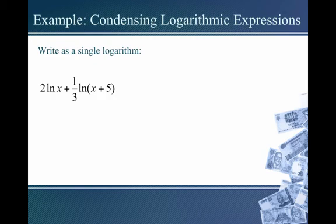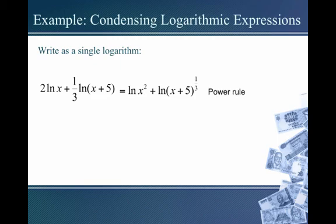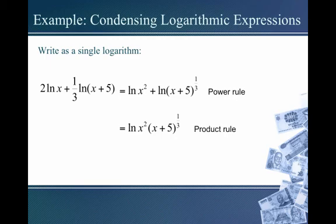Last example: 2 ln of x plus one-third ln of x plus 5. Start with the power rule — rewrite the coefficients as powers inside the natural log. The 2 becomes a square on x, and the one-third becomes the cube root on the parentheses. Now we have the sum of two natural logs, so apply the product rule and write them together inside one log using multiplication: ln of x squared times the cube root of x plus 5.